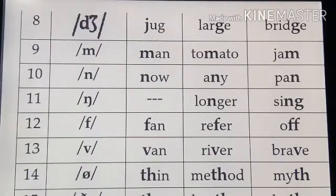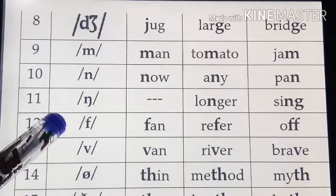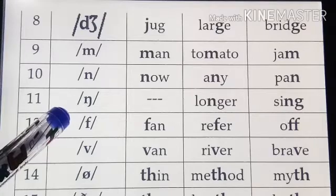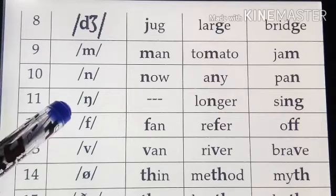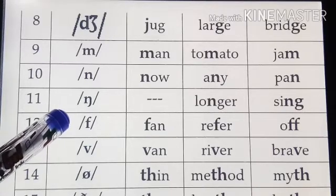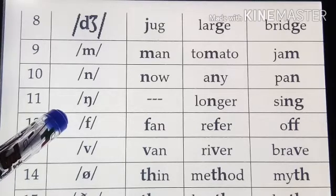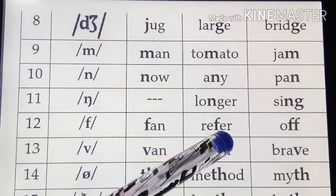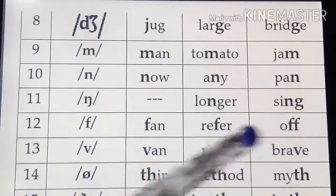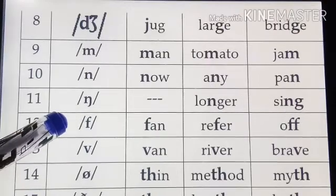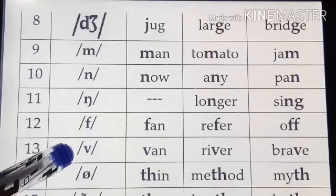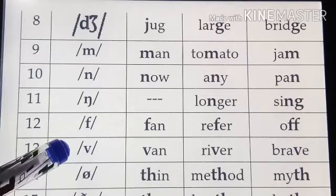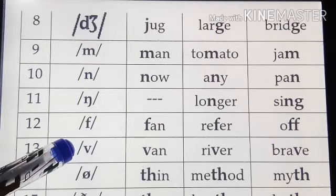Now coming to the twelfth sound — that is /f/. This sound is generated by placing our upper teeth on the lower lip and releasing the air: /f/, /f/. For example: 'fan' (initial), 'refer' (medial), 'off' (final). This is the voiced equivalent of /f/, which is /v/.